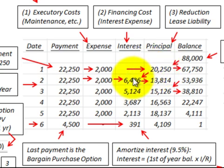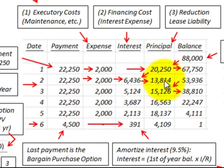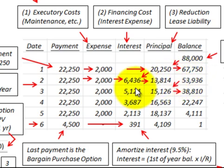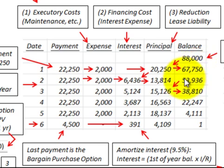The interest expense plus the principal for the year must equal the minimum lease payment. Taking the interest expense of $6,436 and subtracting from $20,250 gives a principal amount of $13,814. For the next year, $13,814 is subtracted from $67,750 to get a beginning balance of $53,936. Multiplying $53,936 by 9.5% gives an interest expense of $5,124.